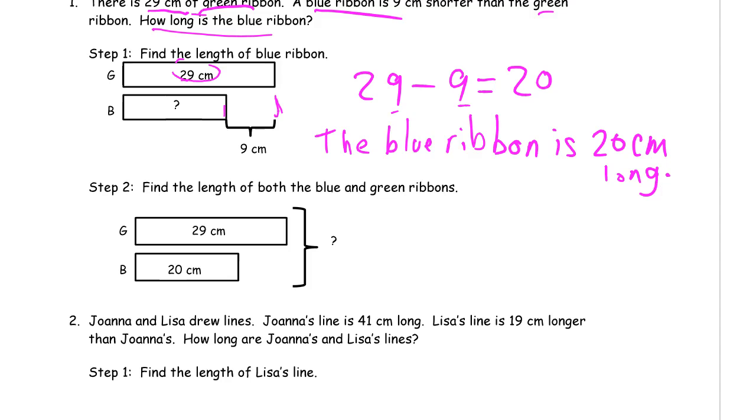Step two: find the length of both the blue and green ribbons. Now when I draw tape diagrams for addition, usually I would draw them end to end like this, right? One and then the other one makes it longer, so that makes sense to me. Sometimes you don't draw it that way. It can look like this too, so we have this bracket here instead that says how much are these two things put together.